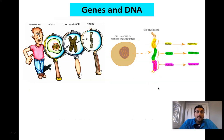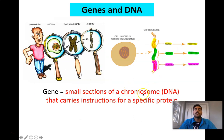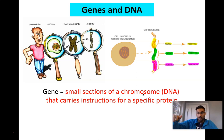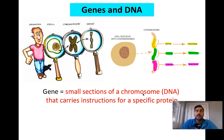A gene is a small section of a chromosome — a small section of DNA — that carries instructions for a specific protein. Genes are portions of DNA that make certain things, anything that has a protein basis. The cells that code for your hair, skin cells, hormones — all of that is controlled by proteins, which are coded for by portions of DNA we call genes.